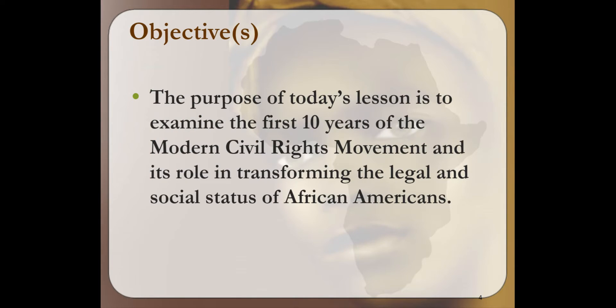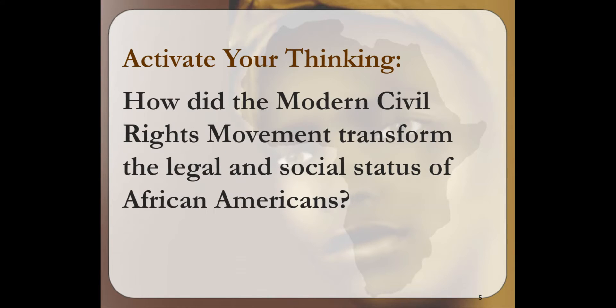The purpose of today's lesson is to continue to examine the first 10 years of the Modern Civil Rights Movement and its role in transforming the legal and social status of African Americans. Let's begin by activating your prior knowledge: How did the Modern Civil Rights Movement transform the legal and social status of African Americans? Take a moment to reflect.